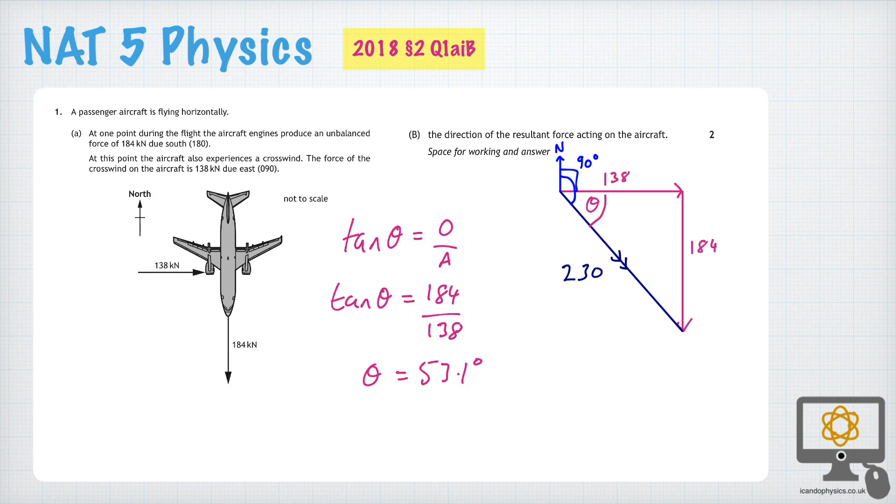And therefore, that the direction of the 230 newton force would be 90 plus 53.1, which is 143 as a bearing.